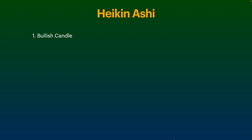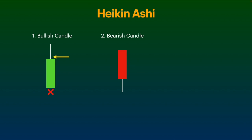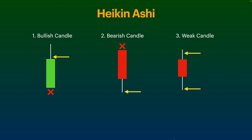The first type of candle is called the bullish candle — a green candle with a huge wick at the top and no wick at the bottom. When you see this kind of candle, we look for a buying opportunity. The second type is the bearish candle — a red candle with a huge wick at the bottom and no wick at the top. When you see this kind of candle, we look for a selling opportunity. The third type is the weak candle, which has a huge wick at both the top and bottom, indicating indecision between buyers and sellers. A weak candle can be red or green — any candle with large wicks on both sides is considered weak.